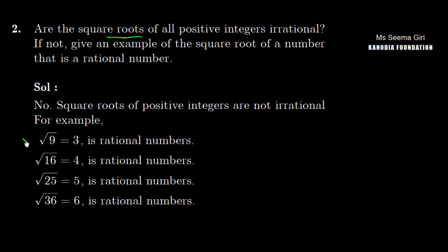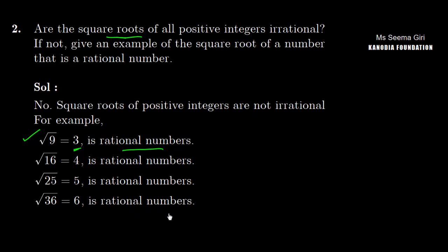For example, under root 9 is 3, and 3 is a rational number. Under root 16 is 4, it is a rational number. Under root 25 is 5, it is a rational number. Under root 36 is 6, it is a rational number.